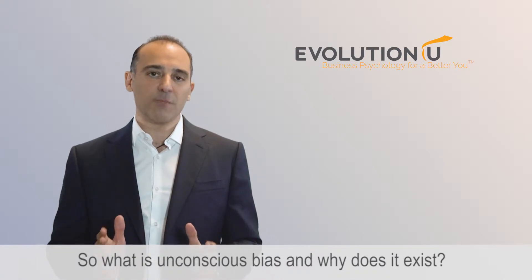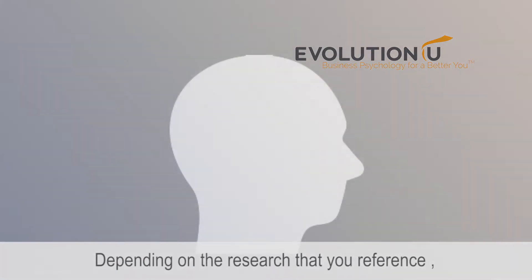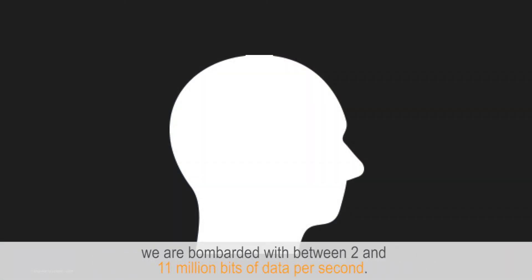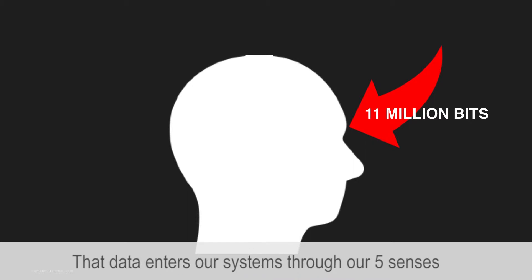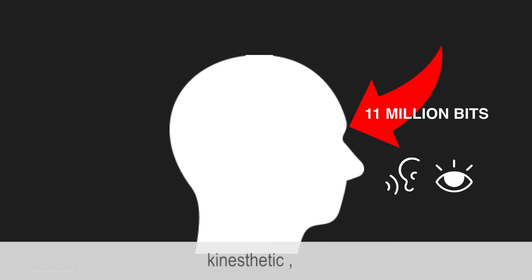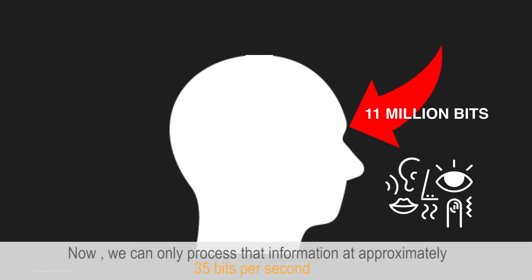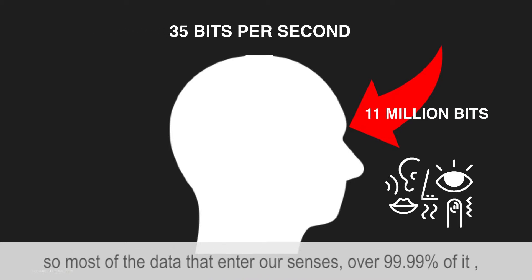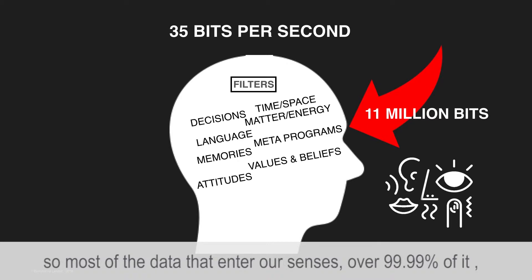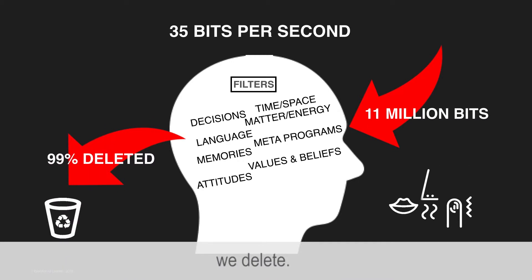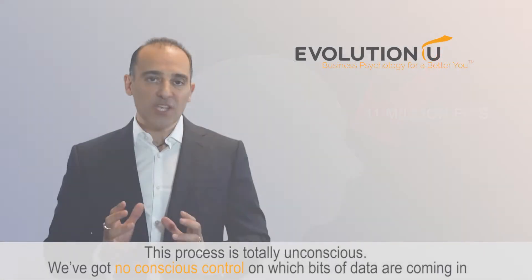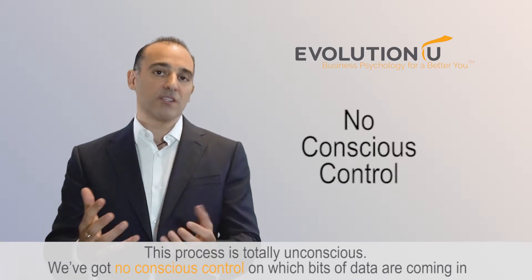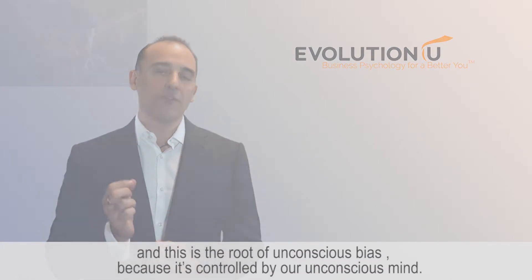So what is unconscious bias and why does it exist? Depending on the research that you reference, we are bombarded with between 2 and 11 million bits of data per second. That data enters our systems through our five senses: visual, auditory, kinesthetic, olfactory, and gustatory. Now we can only process that information at approximately 35 bits per second. So most of the data that enters our senses — over 99.99% of it — we delete. This process is totally unconscious; we've got no conscious control over which bits of data are coming in. And this is the root of unconscious bias.